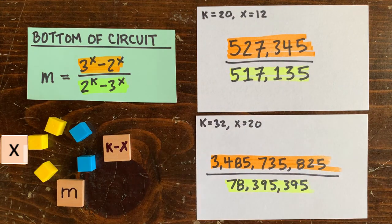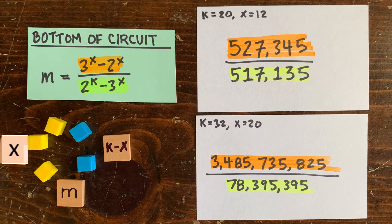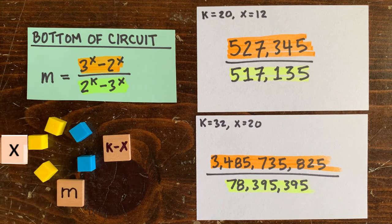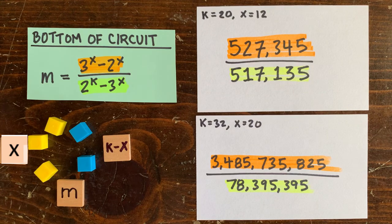How about k equals 32, x equals 20? Is 3,485,000-something divisible by 70 million-something? I don't know, maybe?